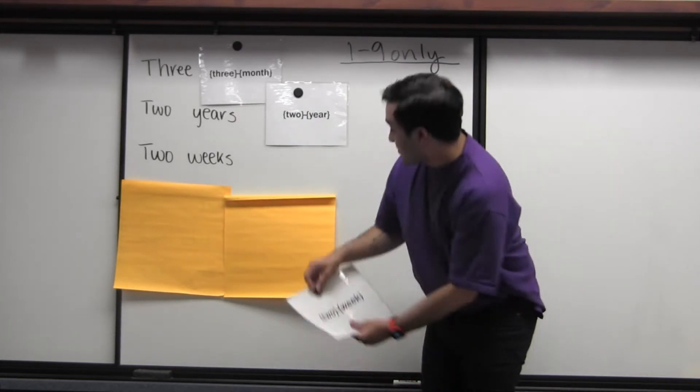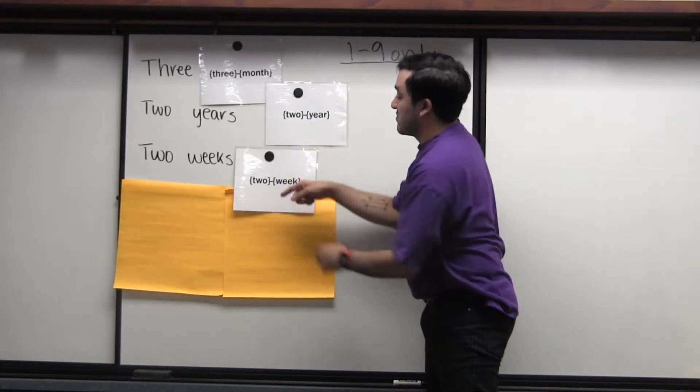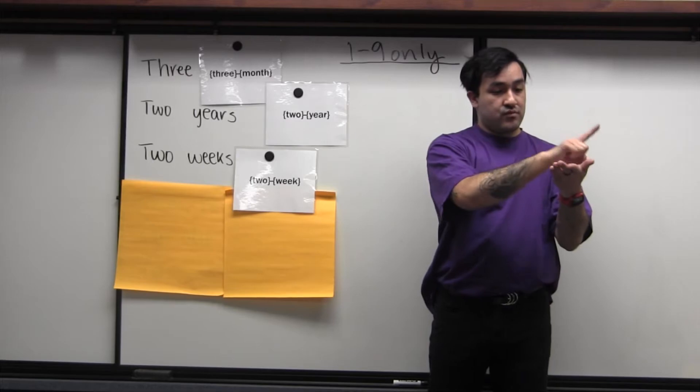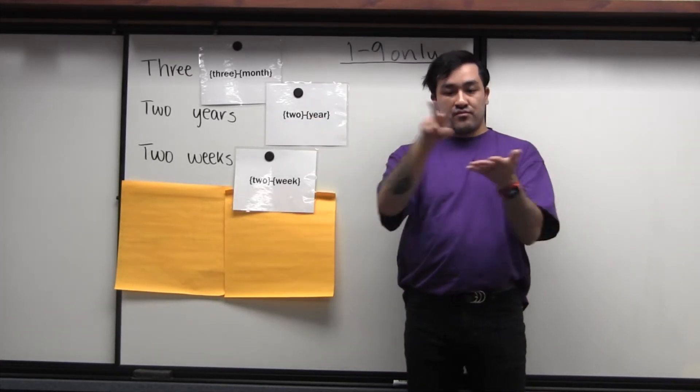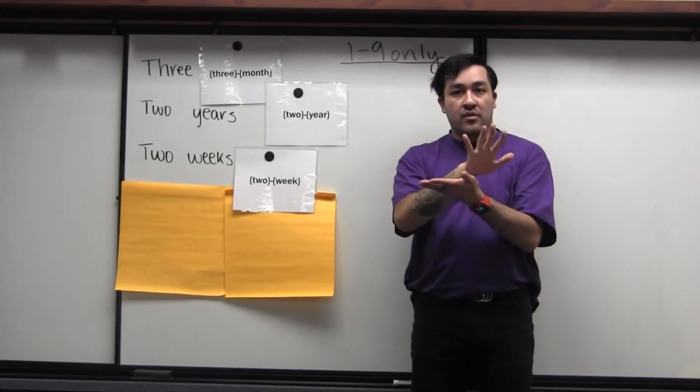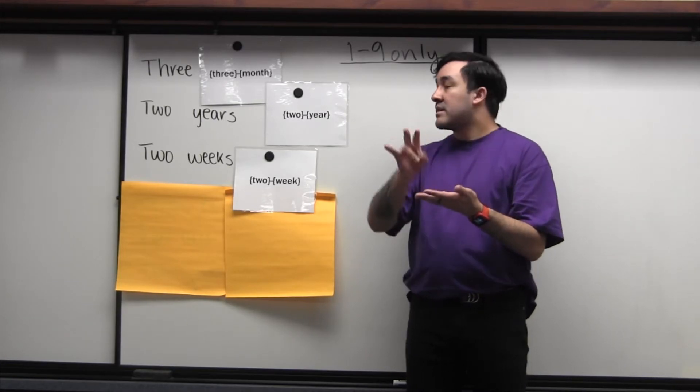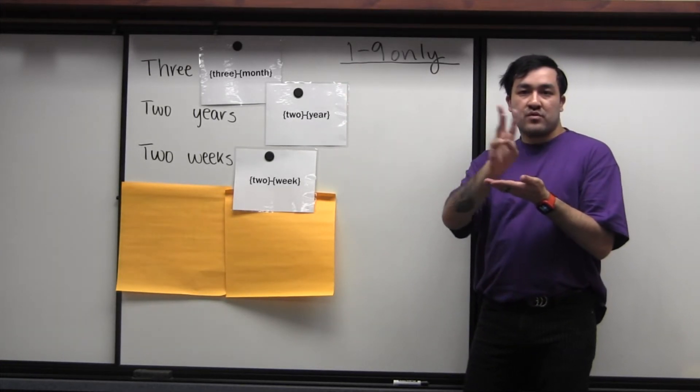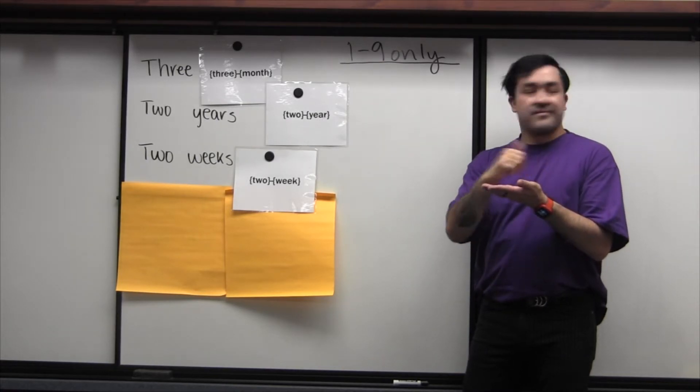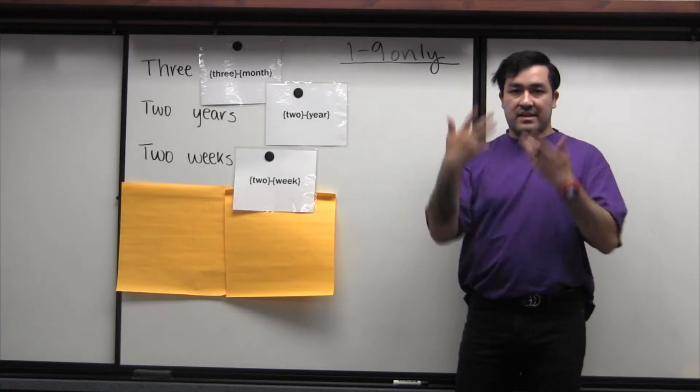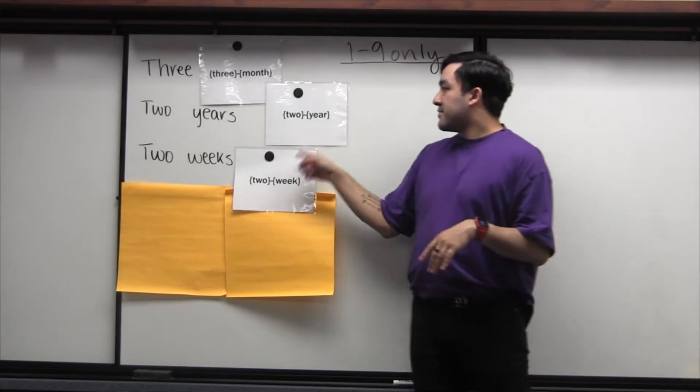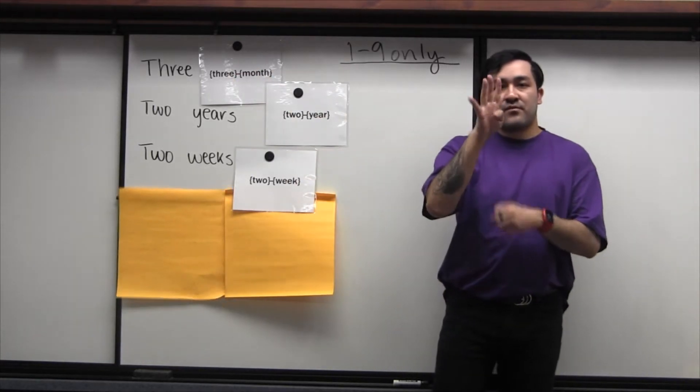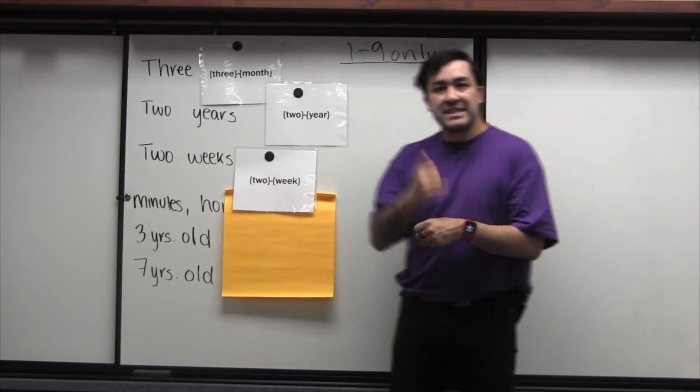And the last one we're going to go over is two weeks. And that was very quickly how I signed that. Again, we take the sign for week and we take the number two and put those together. Two weeks or three weeks or five weeks or six weeks, seven, eight. Remember, we can go all the way up to nine weeks. So we can do all these different numbers. We can't do ten weeks. It doesn't work. That's a rule. It breaks the rule of the language. But all of these perfectly acceptable one through nine.